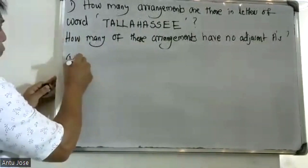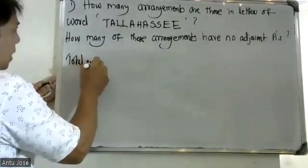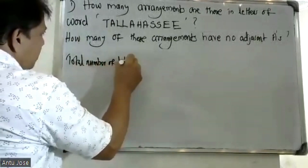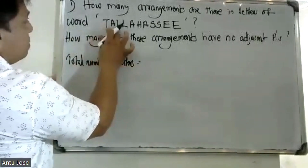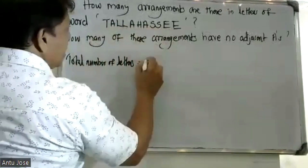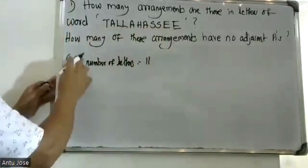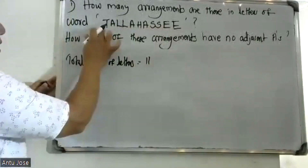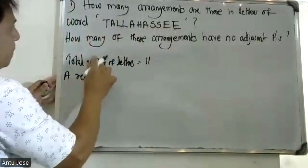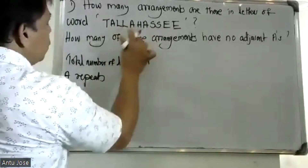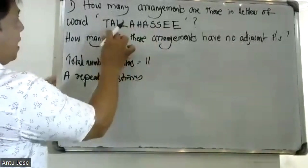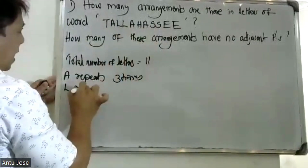The total number of letters is 10 — wait, we count: 1, 2, 3, 4, 5, 6, 7, 8, 9, 10 — 11 letters total. There are repeated letters: some letters repeat multiple times.